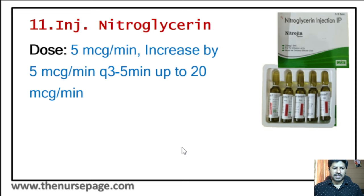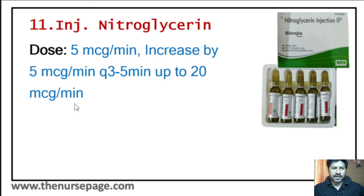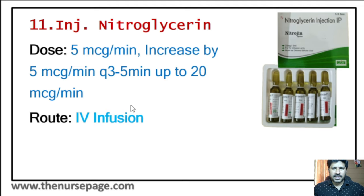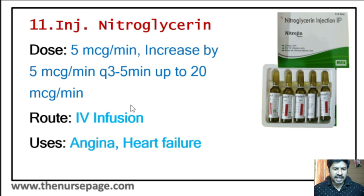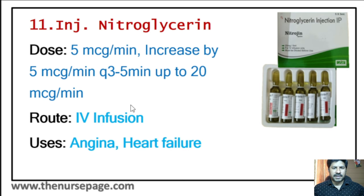Eleventh injection is nitroglycerin. Dose starts at 5 microgram per minute IV infusion, increased by 5 microgram per minute every 3 to 5 minutes up to 20 microgram per minute. Route of administration is IV infusion. Main uses are angina, heart failure, and hypertension — it relaxes blood vessels.